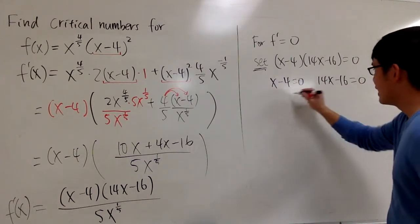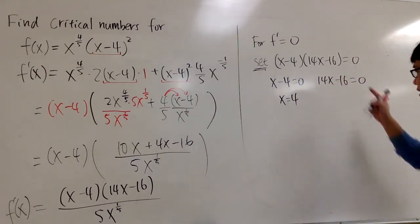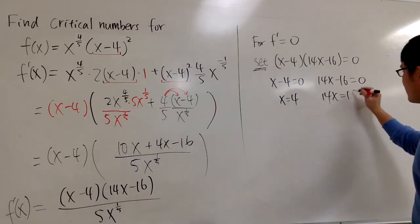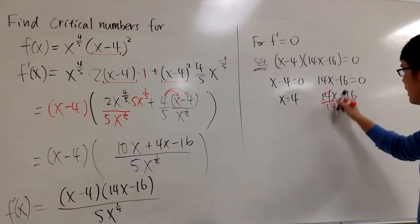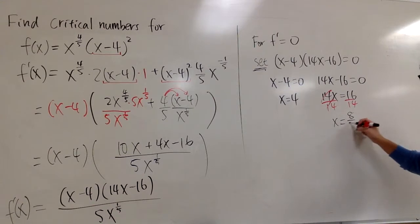One of my answers. This part, bring the 16 to the right: 14x equals to 16. And then here, I can divide both sides by 14. And x will be, I can reduce this by 2, namely I get 8 over 7. Second answer.